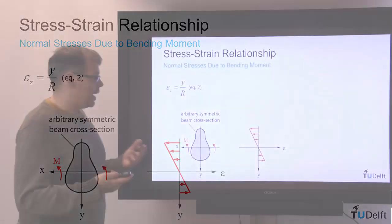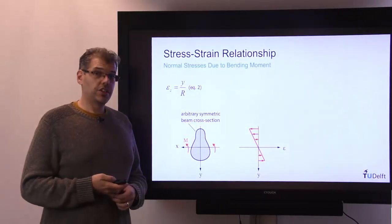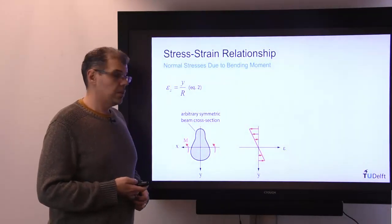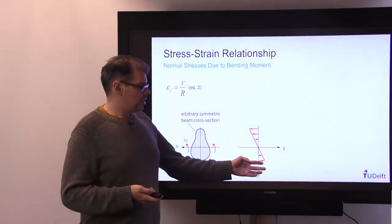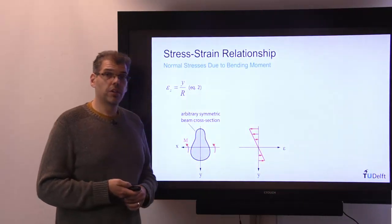If we plot that, we see that we get this nice linear strain distribution with the distance from the neutral axis. Tension on one side, compression on the other.